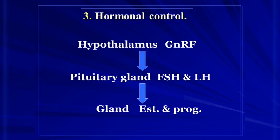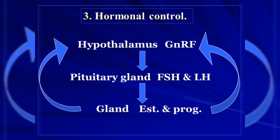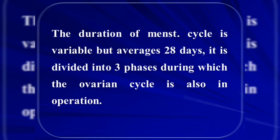The follicle-stimulating hormone and luteinizing hormone from the pituitary act on the ovaries, leading to estrogen and progesterone secretion. There is a feedback mechanism from estrogen and progesterone that regulates the ovarian follicle maturation and endometrium, which will be important for future development.